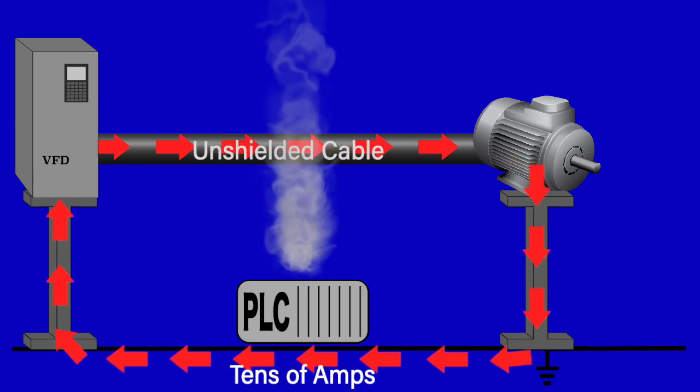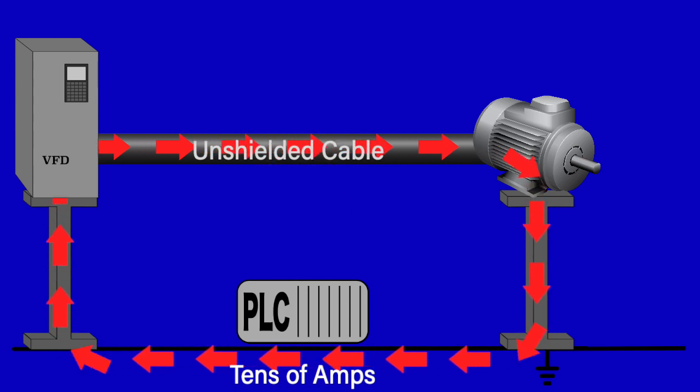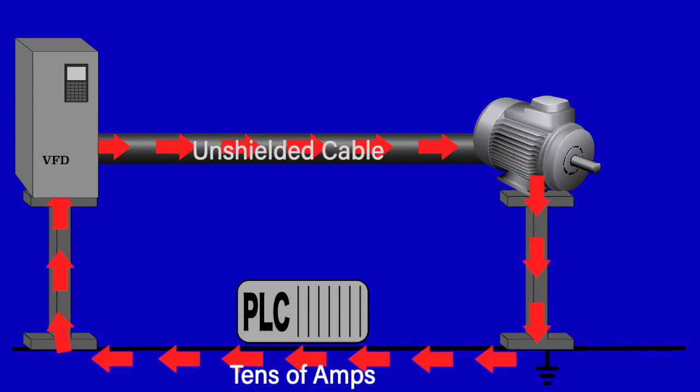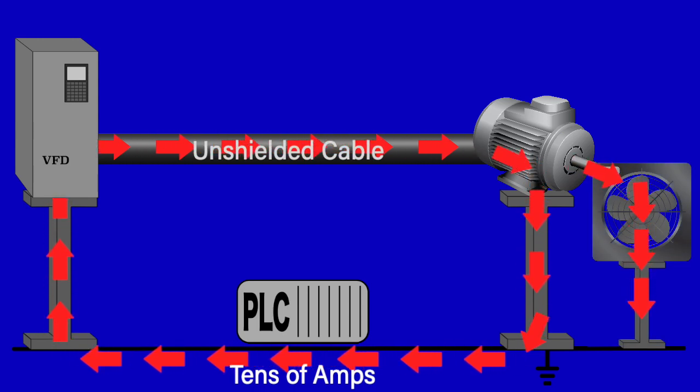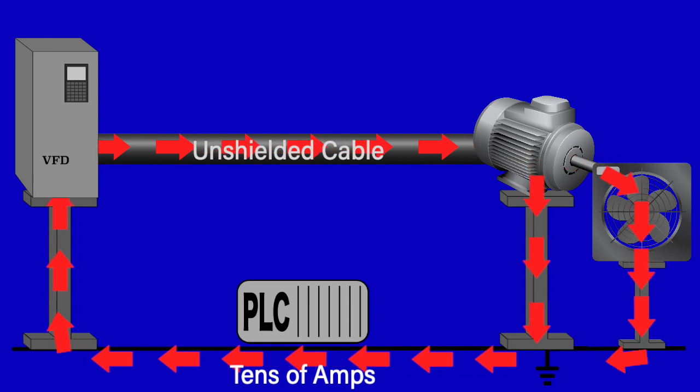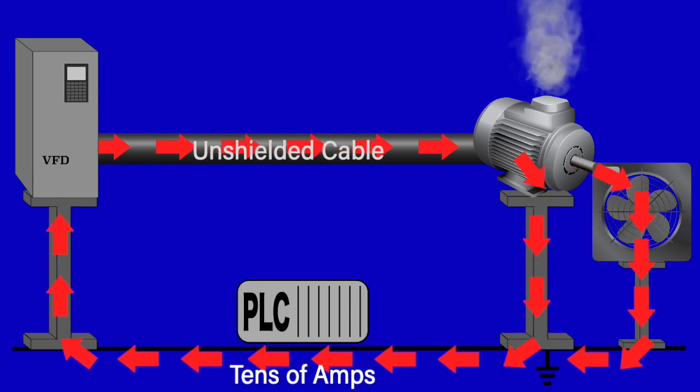Because this current path is unknown, it's impossible to predict where the current might flow on its way back to the inverter. In addition to flowing through the motor frame and base plate to building steel, another possible path is through the motor bearings to the motor shaft, connected machinery, and then to the building steel infrastructure. This path can damage motors by causing bearing damage known as bearing fluting, which can cause motor failure after 3 to 12 months of operation.